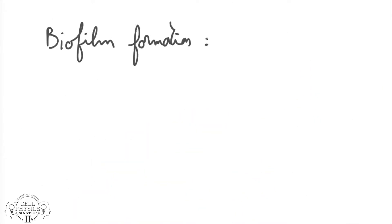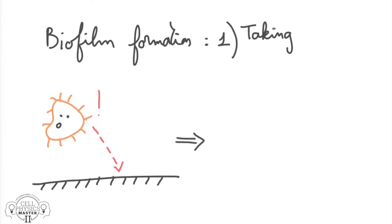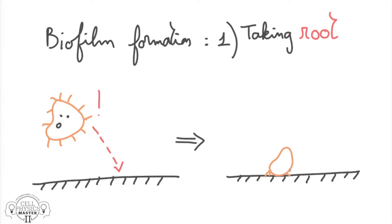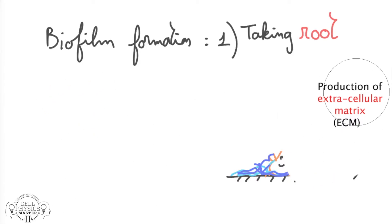The formation of a biofilm begins when floating microorganisms come into contact with a suitable surface and take root. During this first adhesion step, the microorganisms produce an extracellular polymer substance — the future cell matrix — which allows the microorganisms in a biofilm to stick together.